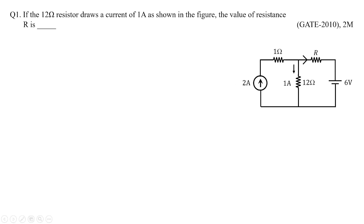In this first problem we can see: if the 12-ohm resistor draws a current of 1 ampere as shown in the figure, the value of resistance R is — this is a GATE 2010 problem where the unknown value of resistor we need to find. The 12-ohm resistor draws a current of 1 ampere; that is the information given to us.